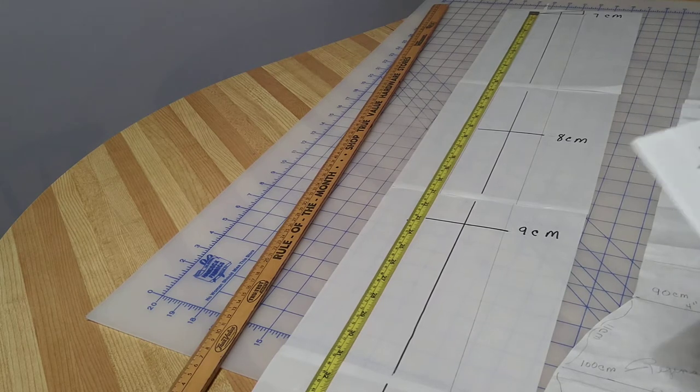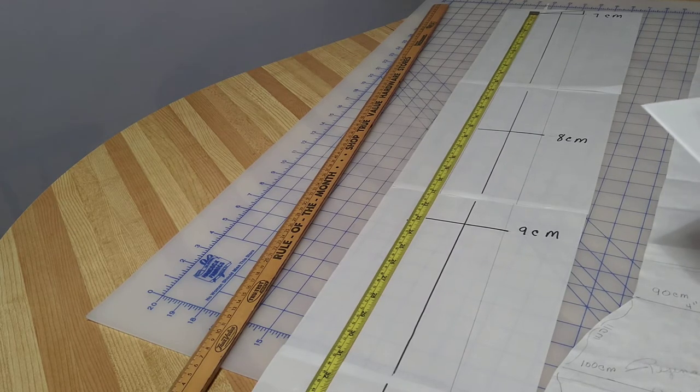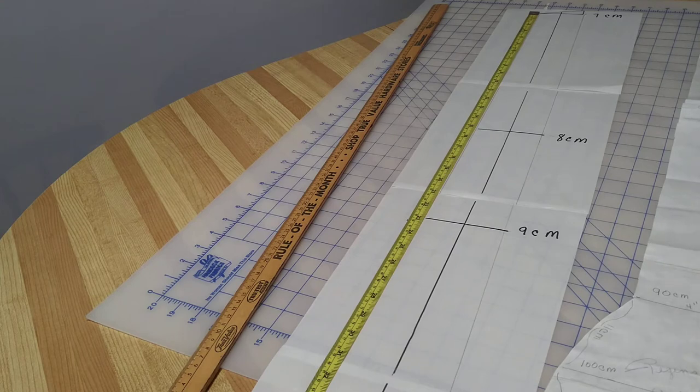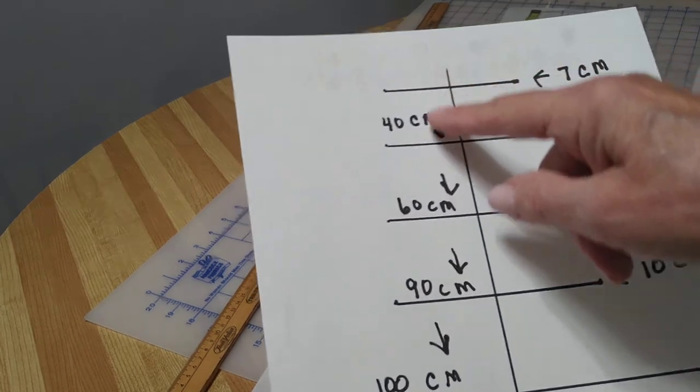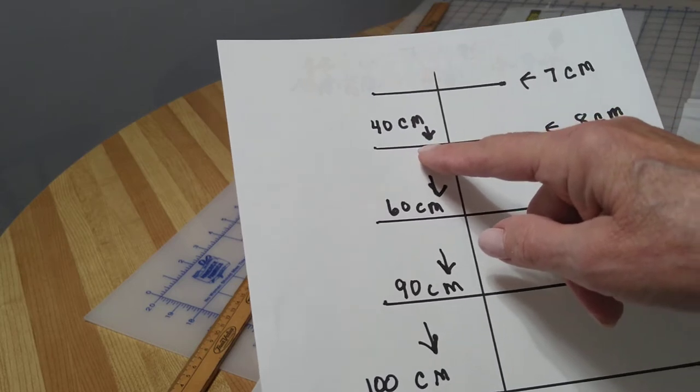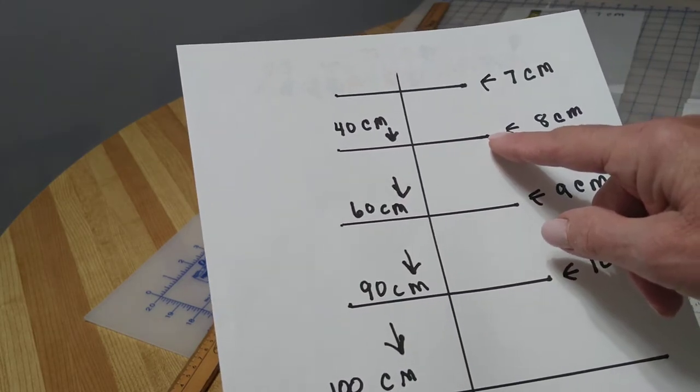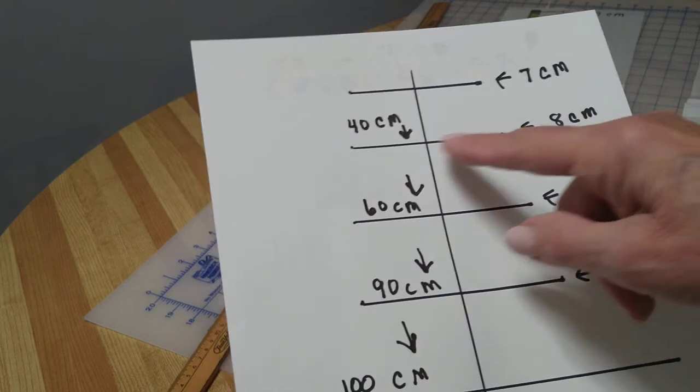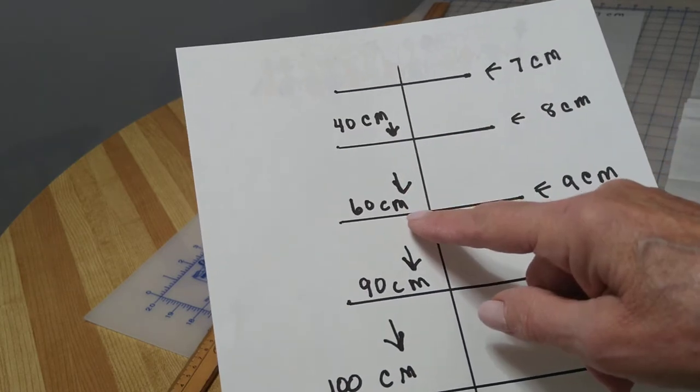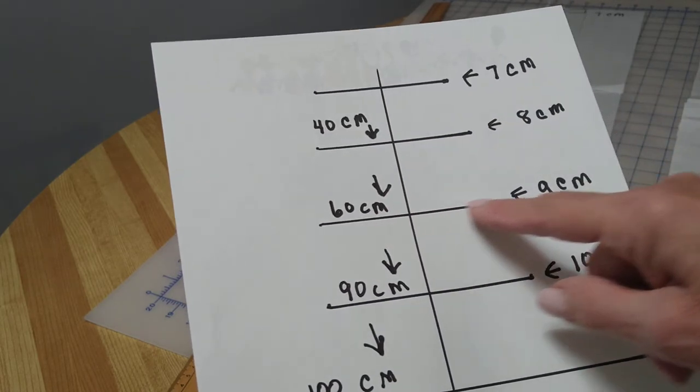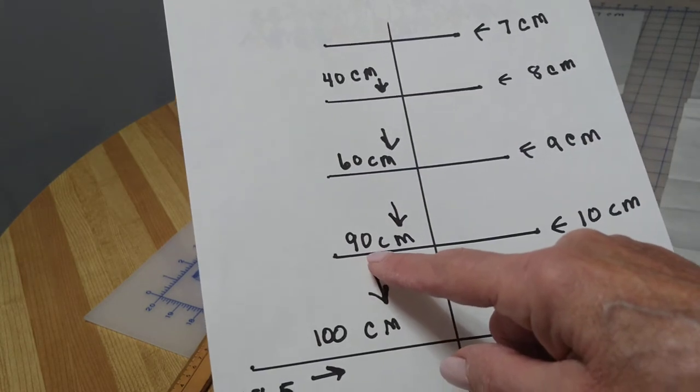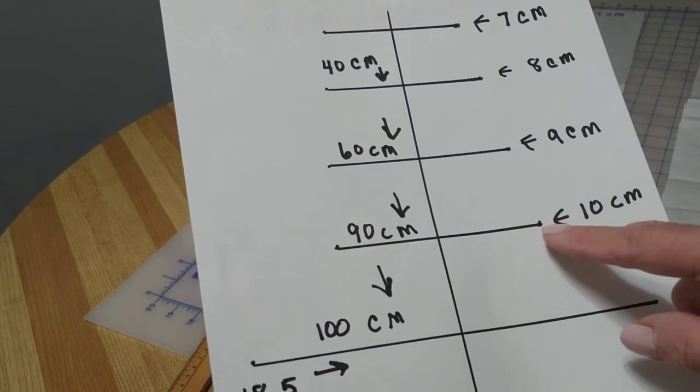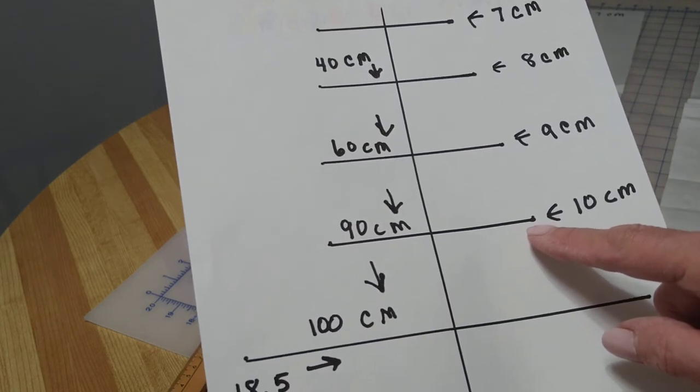Like I said, that angle at the top is not included. So from the top, you're going to measure 40 centimeters down and make your next line 8 centimeters. Go down again to 60 centimeters, make this line 9 centimeters. Come down to 90 centimeters and make this line 10 centimeters.